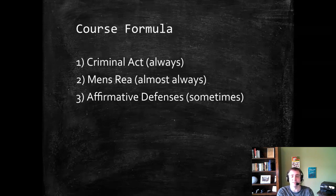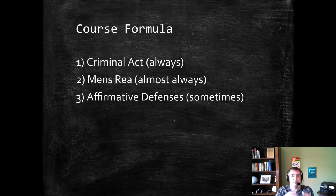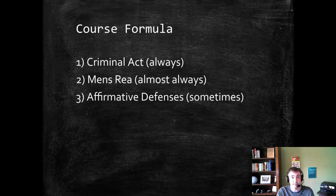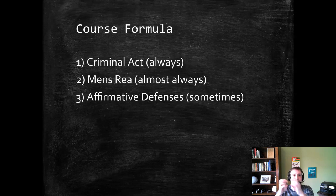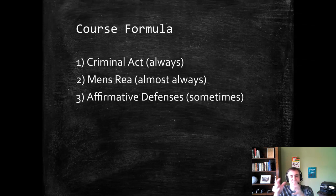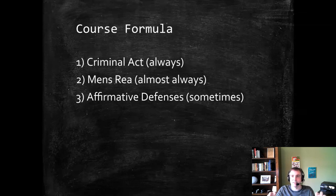For now, we need to focus on this basic formula that will repeat itself over and over. We'll do the general rules of actus reus and mens rea, but then apply them in more sections. When we get to attempted crimes, accomplice liability, rape, and homicide, we'll look at the act requirements and mens rea. The important thing first is to learn the basic building blocks.